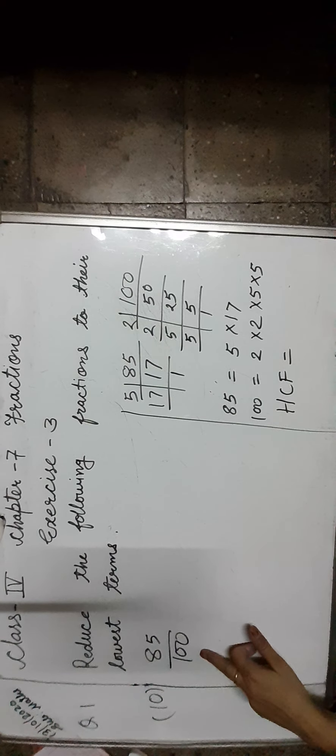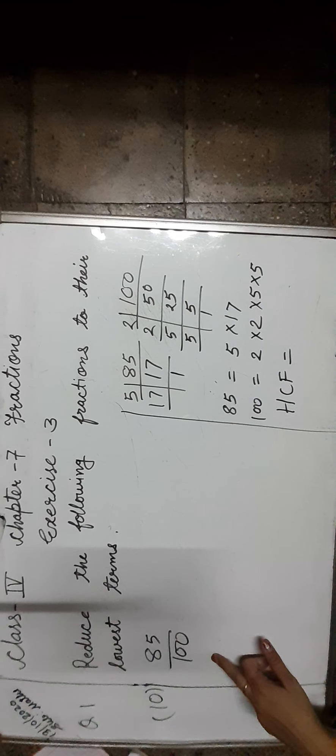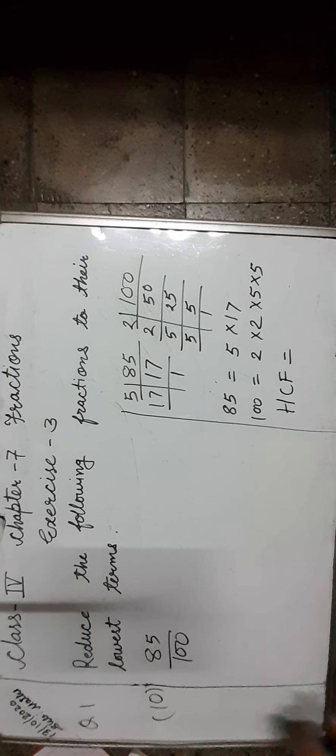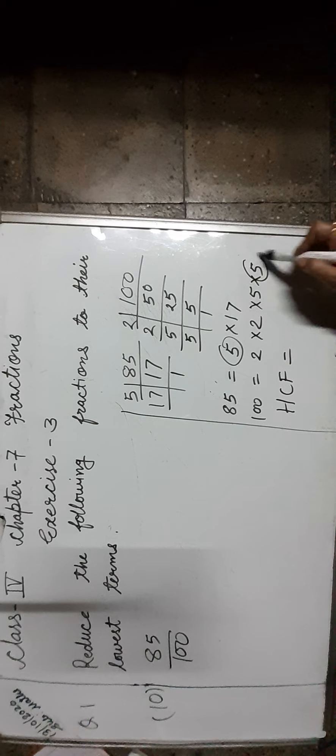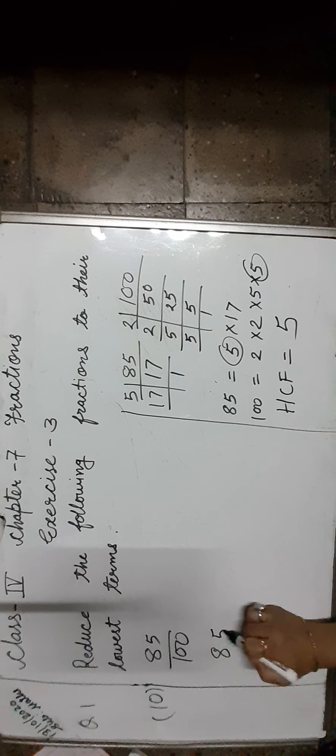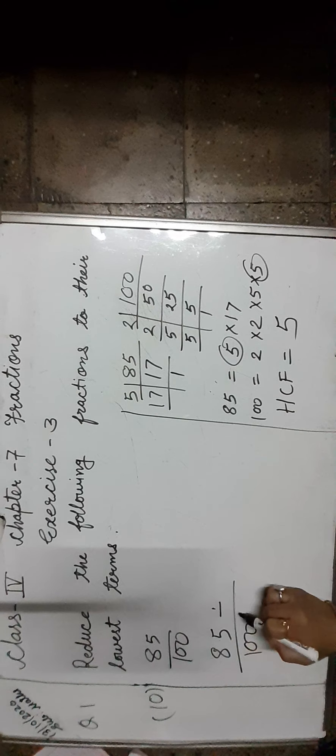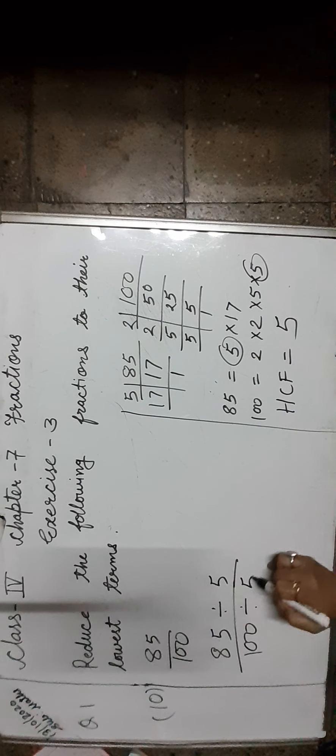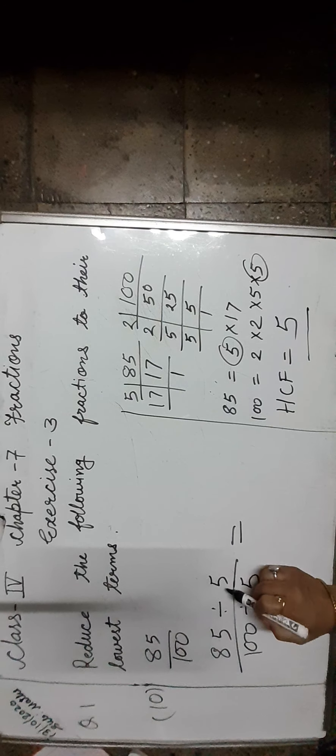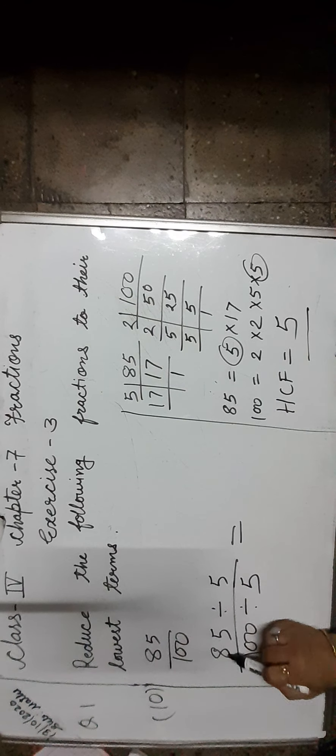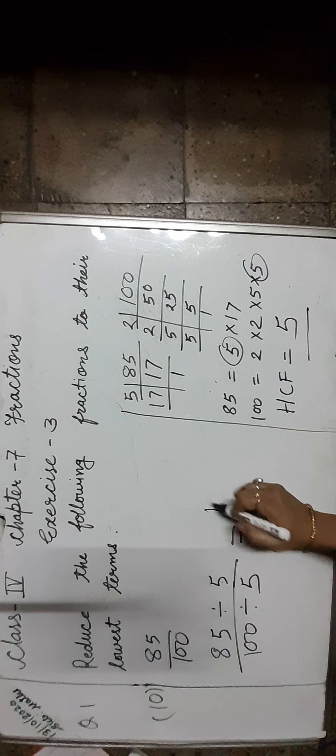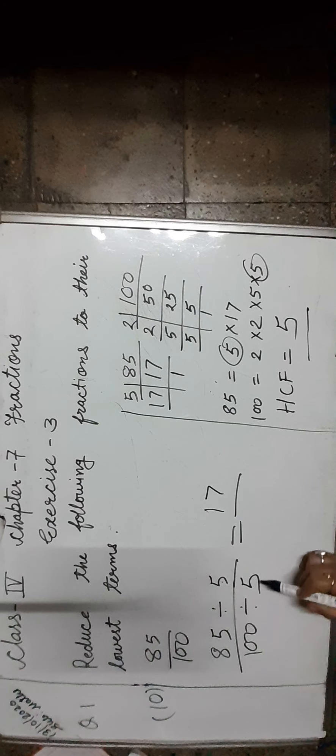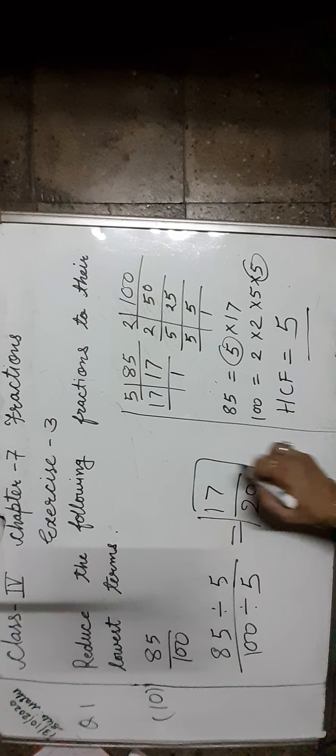Let us find out the lowest term of 85 upon 100. First, we find the HCF of 85 and 100. The HCF of 85 and 100 is 5. Let us divide 85 and 100 by 5. When we divide 85 by 5, we will get 17, and when we divide 100 by 5, we will get 20. So the lowest term of 85 upon 100 is 17 upon 20.